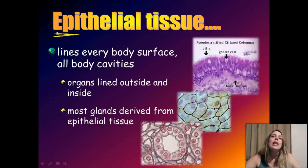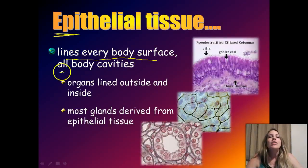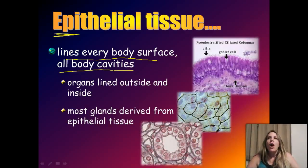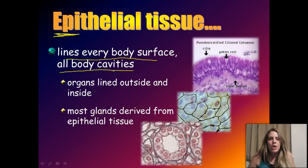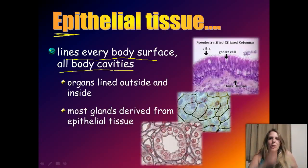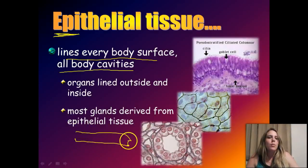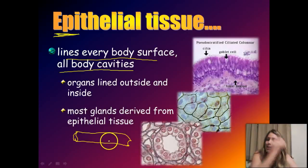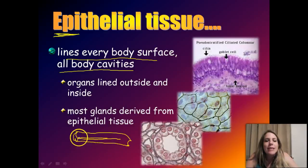Learning these prefixes early on will really help you through your anatomy and physiology studies. Epithelial tissue is tissue that lies upon another kind of tissue — it lines every body surface and all body cavities. All your blood vessels, for example, are lined on the inside and outside with epithelial cells. One way to think of it: epithelial tissue is always facing some kind of space.